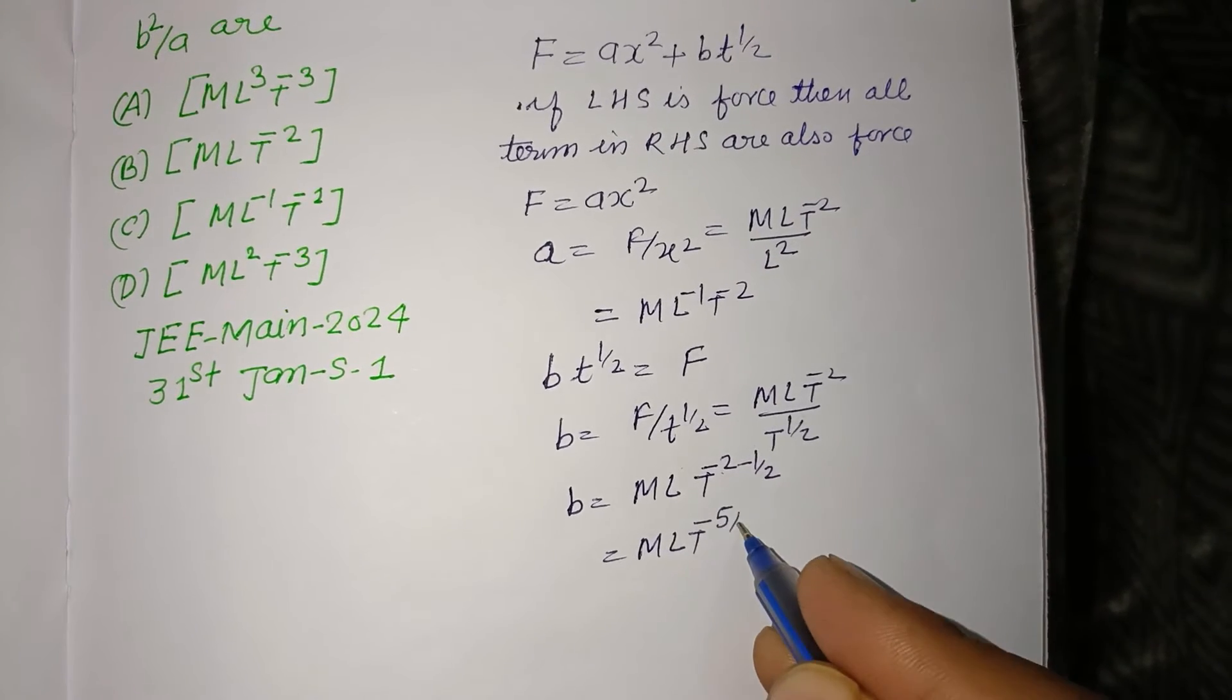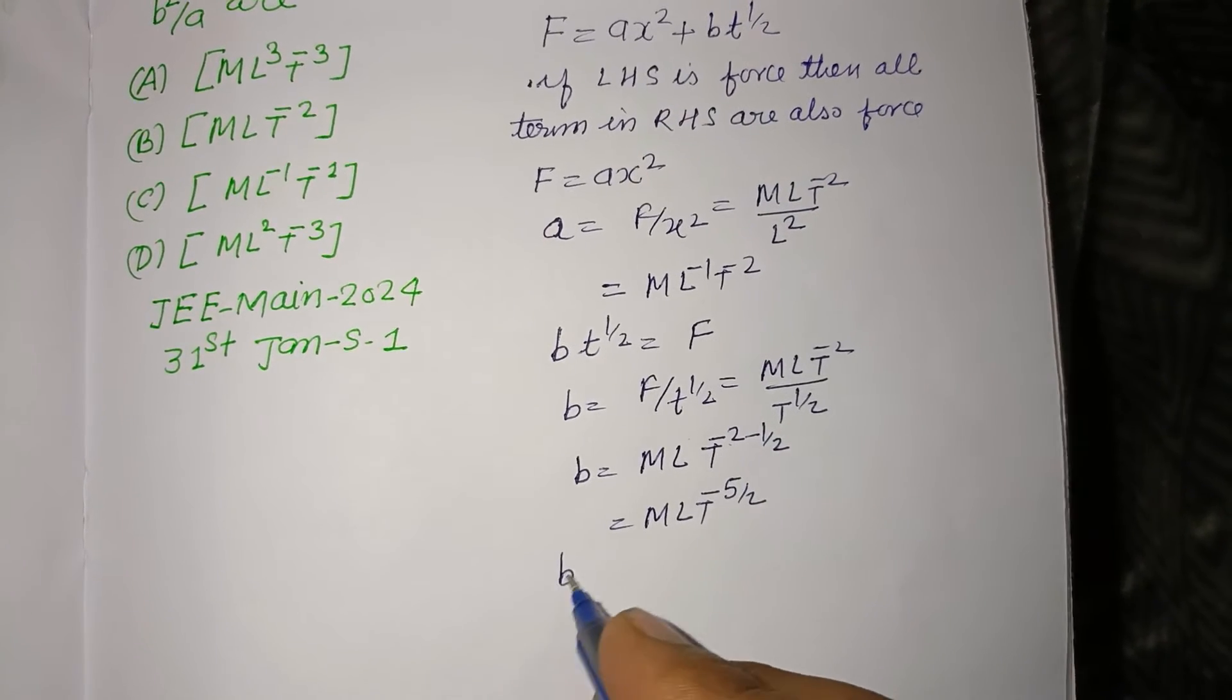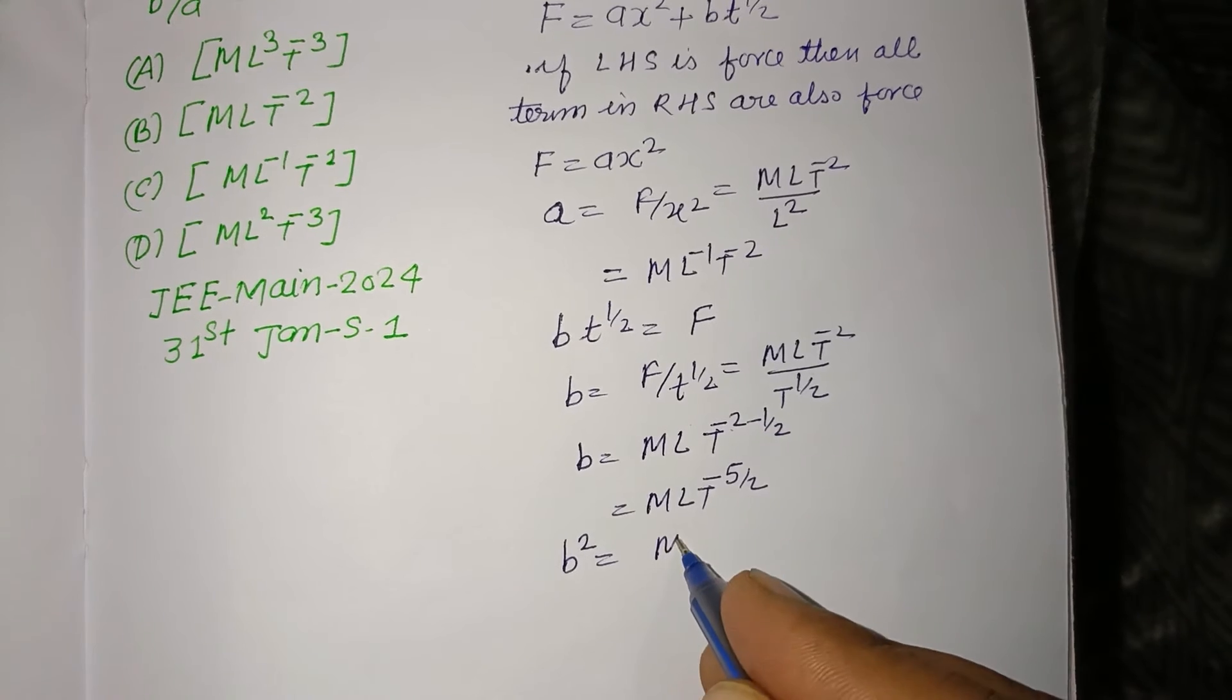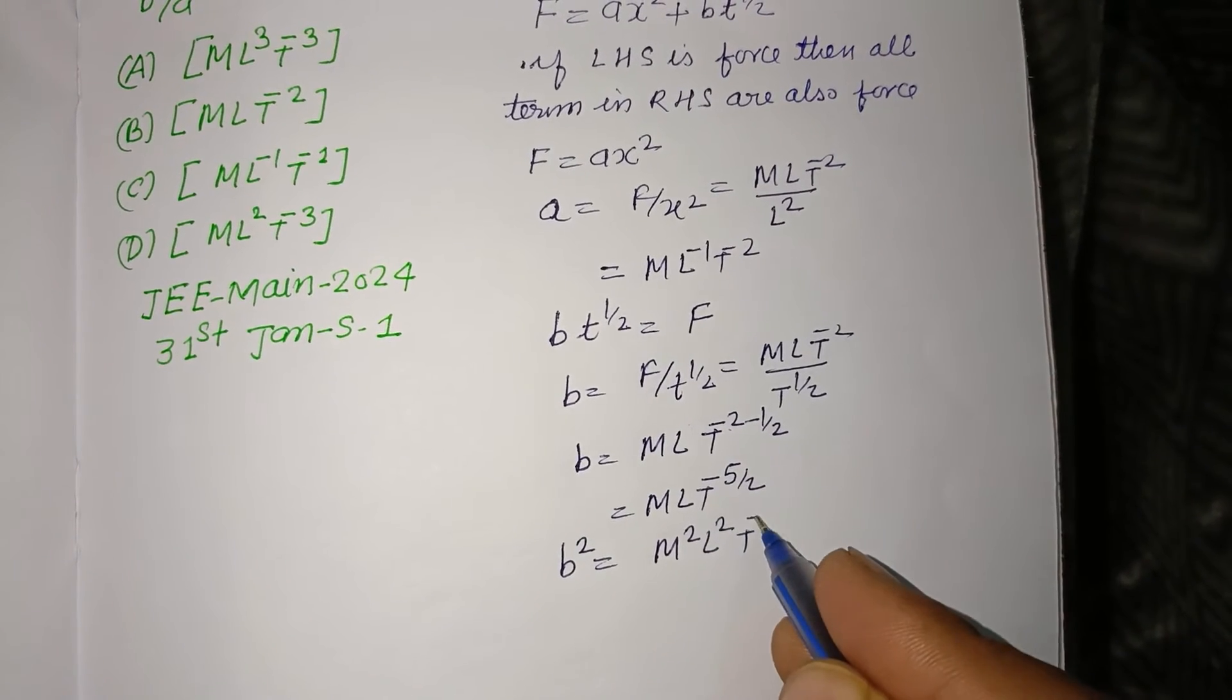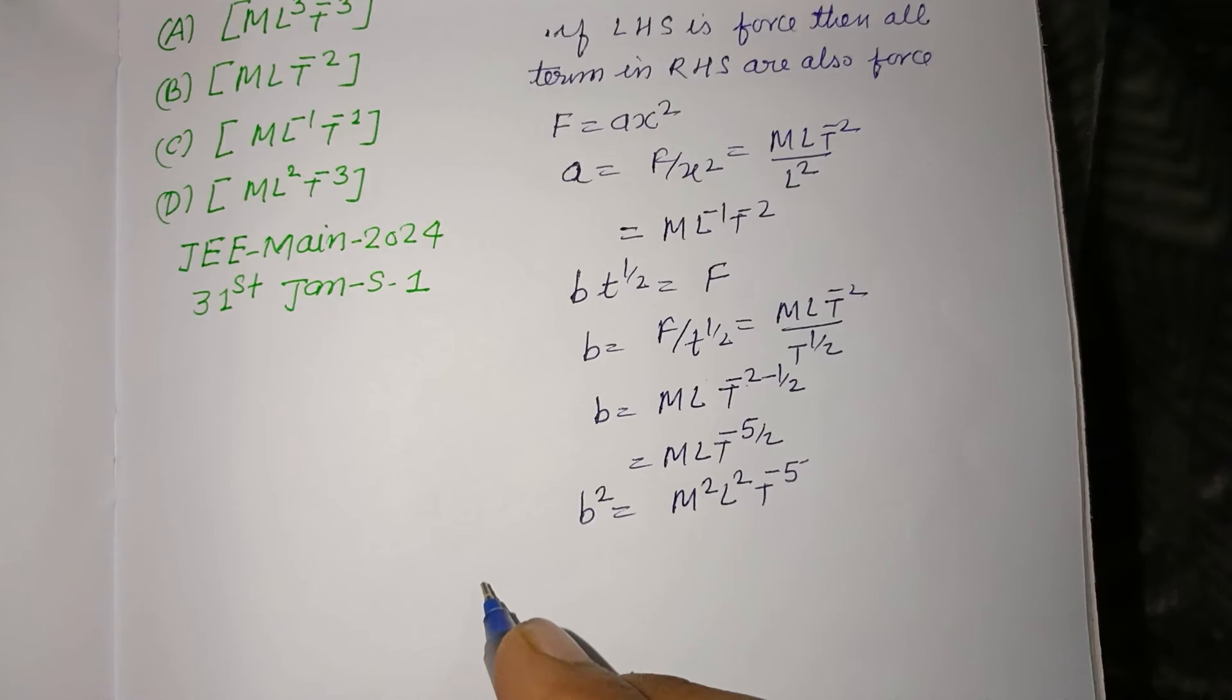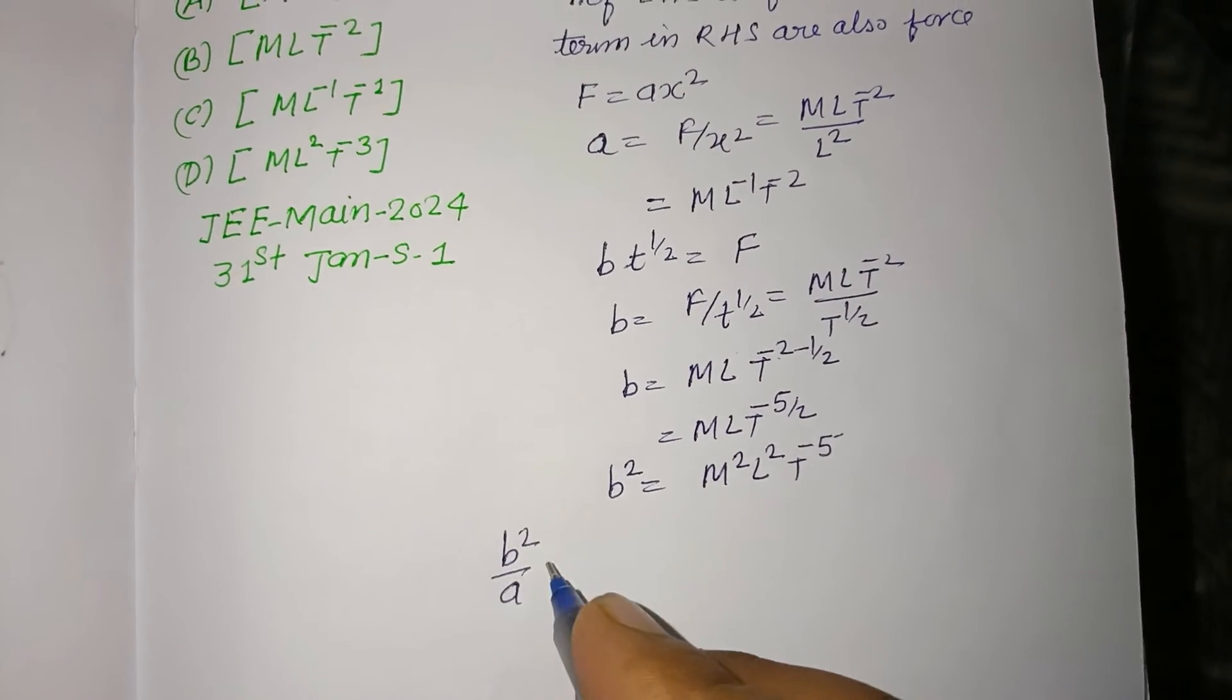Here, b² is M²L²T^(-5). So b² over a is...